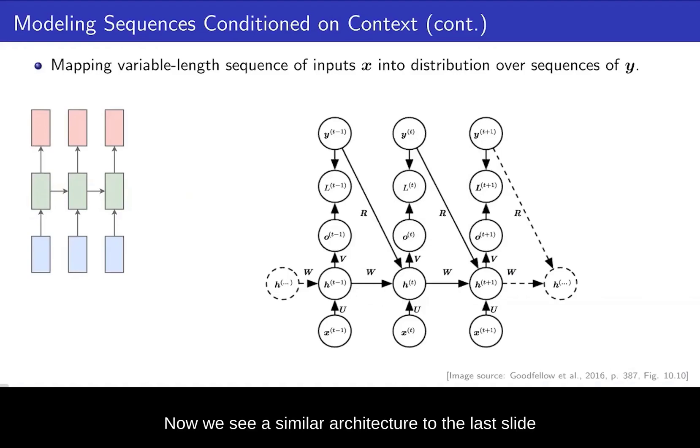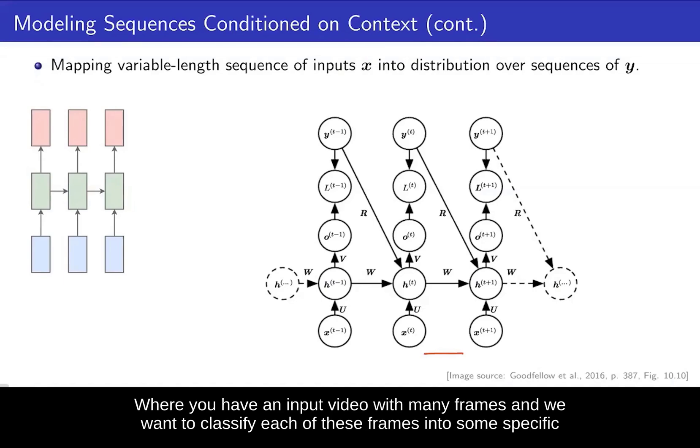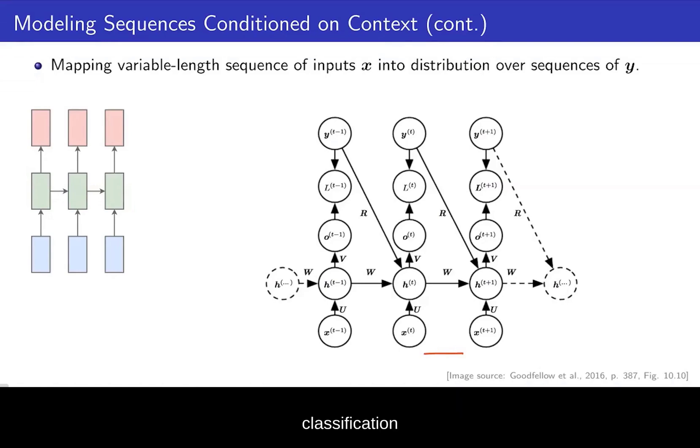Now we see a similar architecture to the last slide, but in this one you have the variable length of input sequence X here. And in the previous one, we only had a fixed length of X. So this would be an example for video frame classification, where you have an input video with many frames and we want to classify each of these frames into some specific classification.